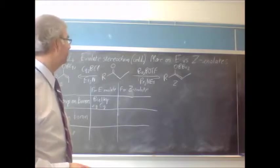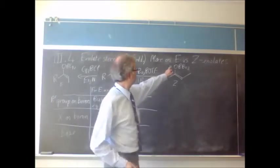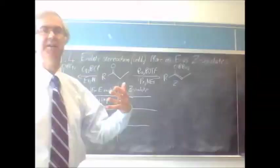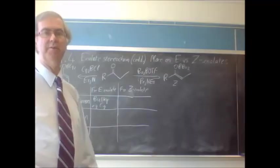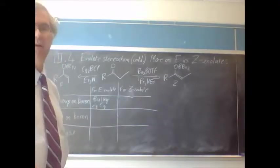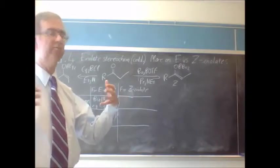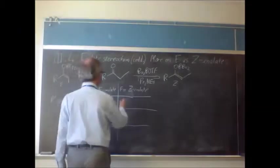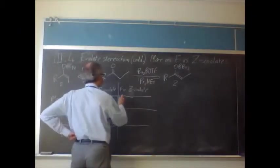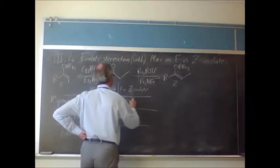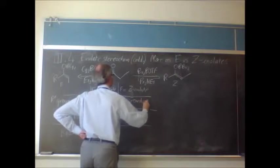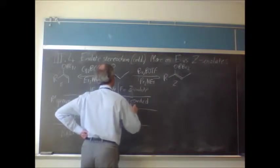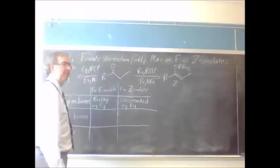For a Z enolate, where you have these groups that are going to be hitting their heads against each other, you want something a bit smaller on the boron, and as long as it's not too crowded, that's what we're looking for. So a butyl group is commonly used.